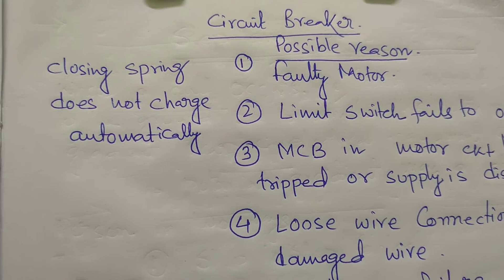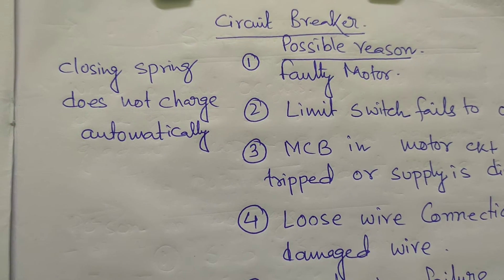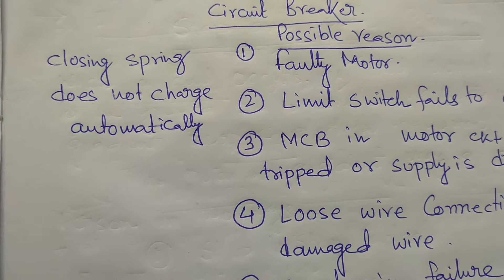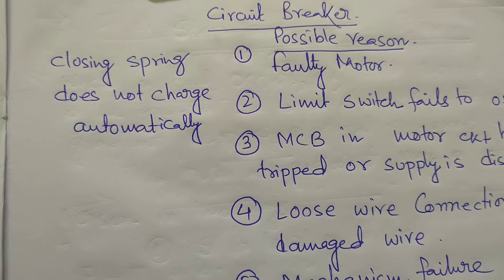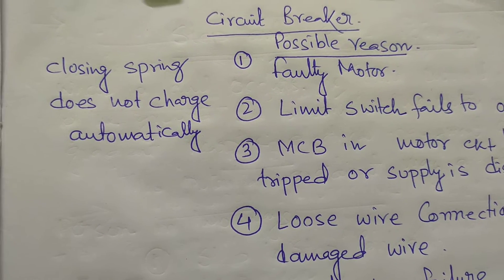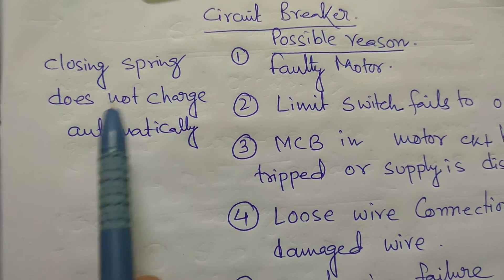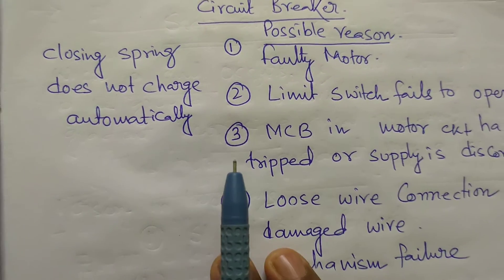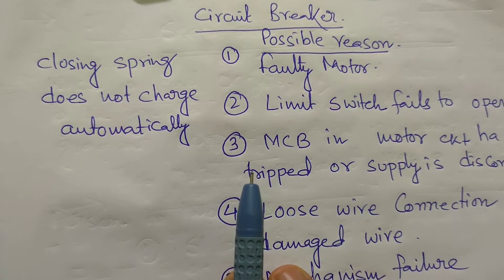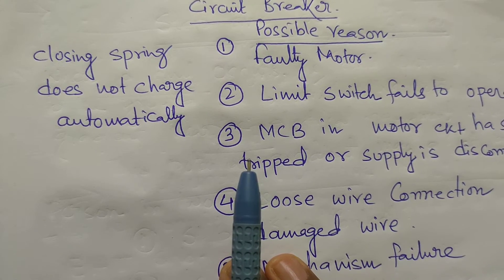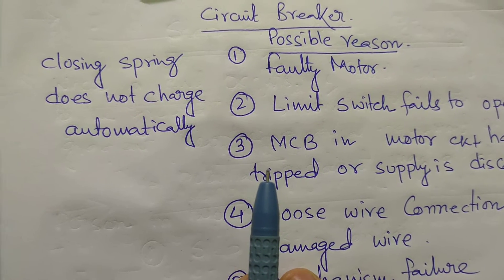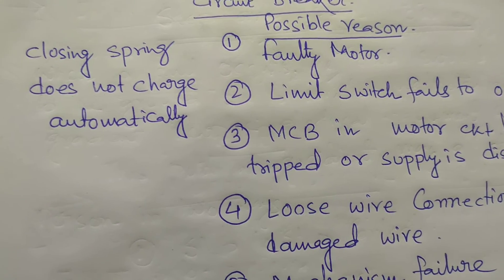Today's topic is about the spring charging motor and its functions. The spring charging motor operates to charge the spring for the next operations of the circuit breaker. After every switching on and switching off operation is completed, the spring charging motor automatically makes the spring ready for the next operation. But if the closing spring does not charge automatically, what could be the possible reason?